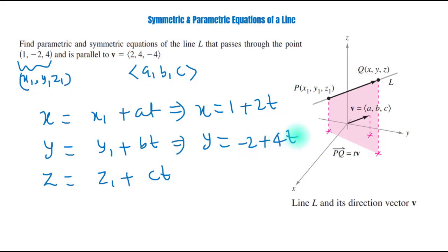And z equals 4 minus 4t. So, this is parametric form of equation of a line.